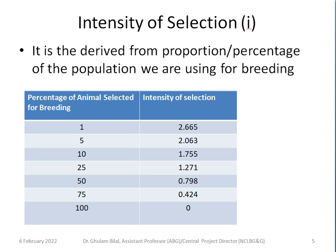Intensity of selection is derived from the proportion or percentage of the population used for breeding. For example, with 100 animals, using the top 5% for breeding gives an intensity value of 2.063; using the top 10% gives 1.755. If all 100 animals are used for breeding, the intensity value would be 0 and there would be no genetic gain from that selection.